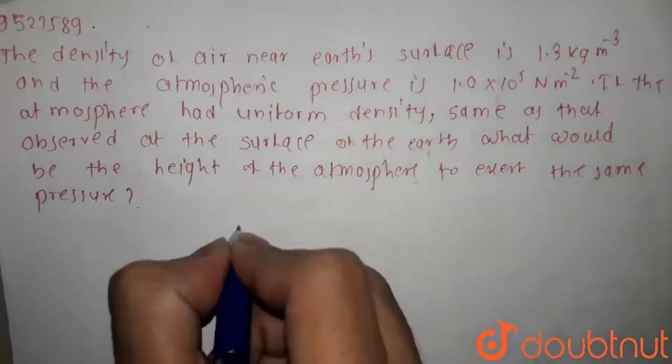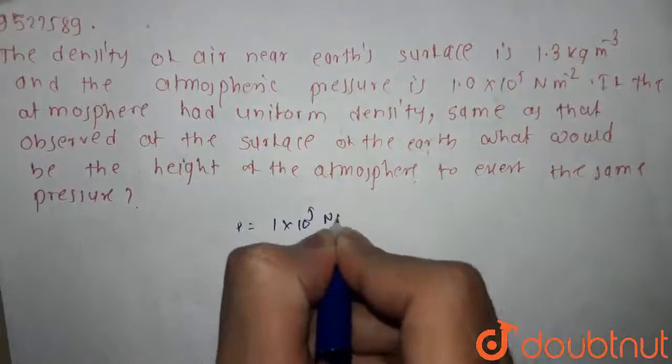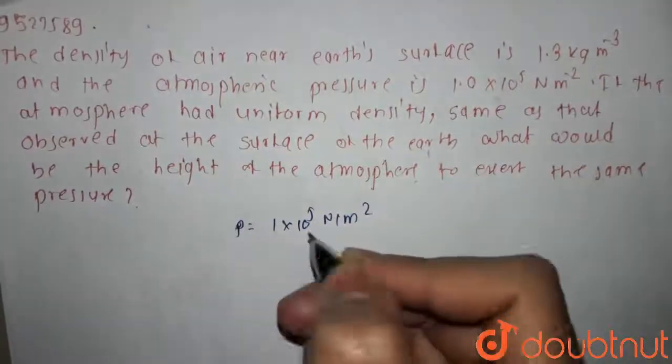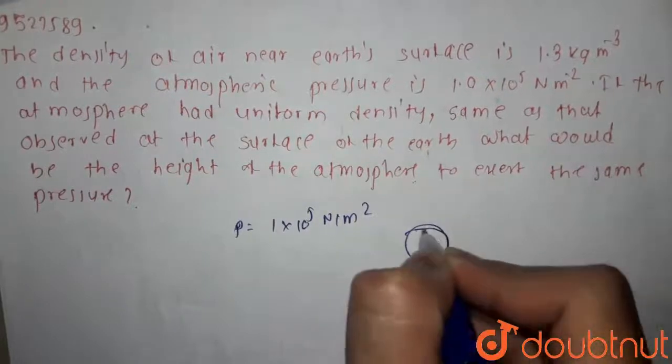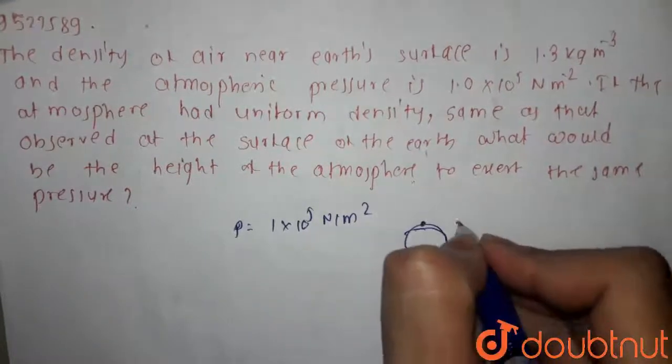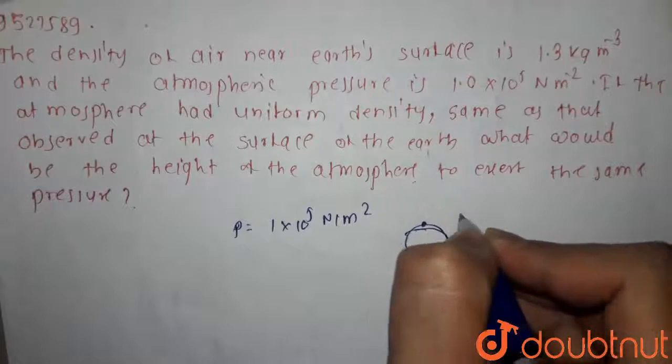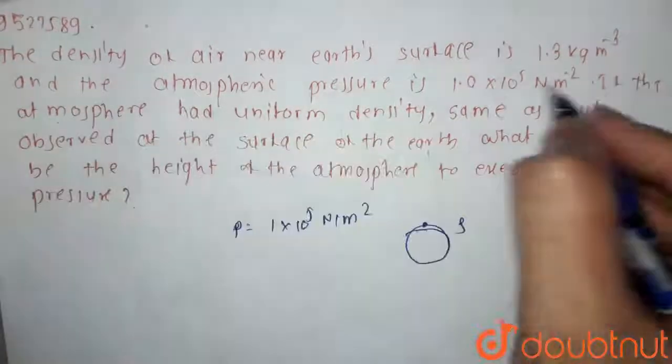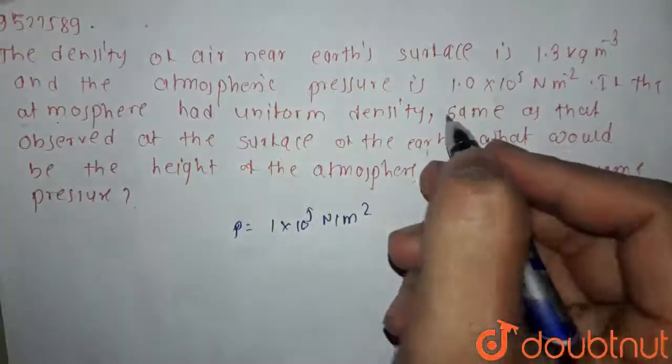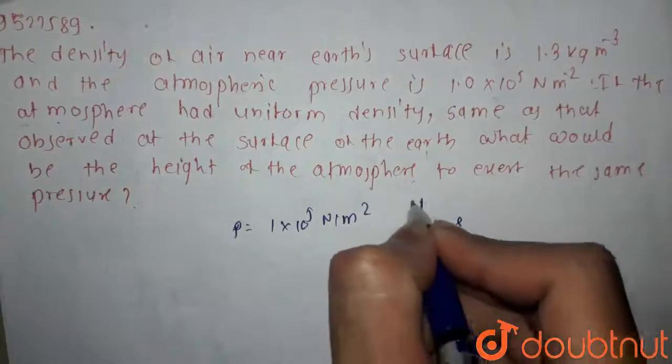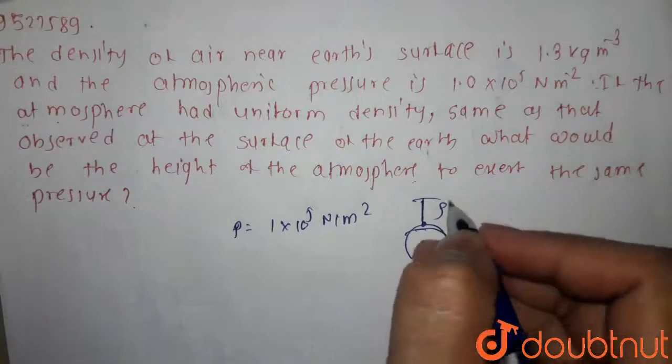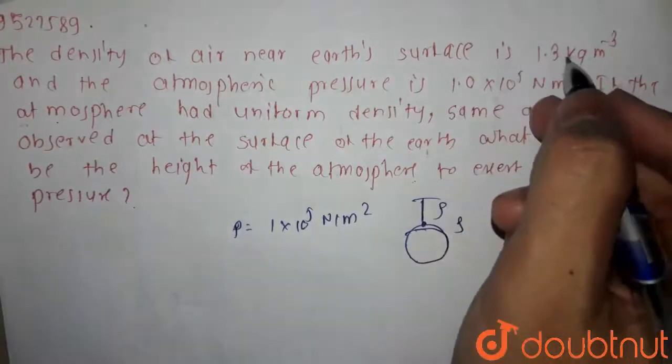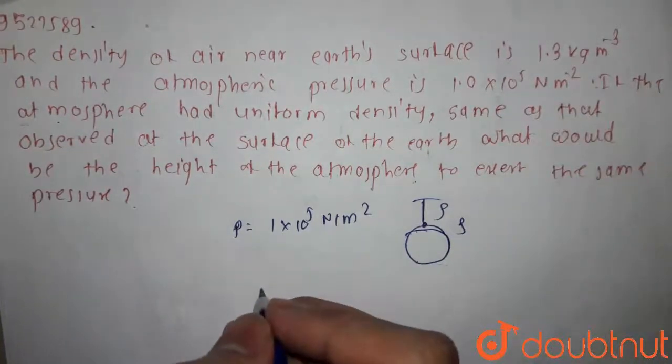So, the pressure is 1 into 10 to the power 5 Newton per meter square. This is the surface of Earth's surface. The density of the surface is rho, and this rho is constant. If the atmosphere had uniform density, this density of the atmosphere is constant, this is uniform density, rho equals to 1.3 kg per meter cube.